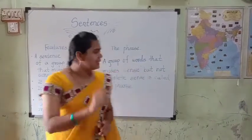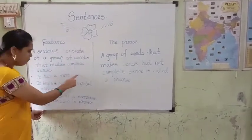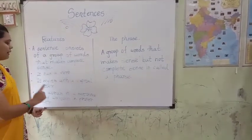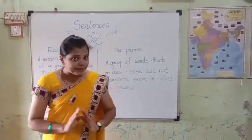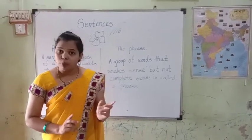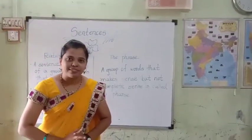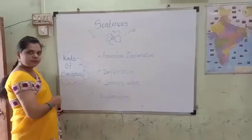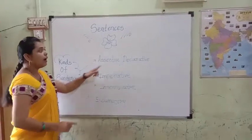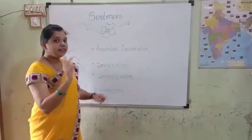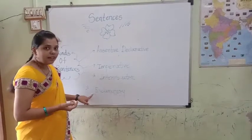So, a sentence consists of a group of words that makes complete sense. It has a verb. It begins with a capital letter. The words in the sentence are written in proper order, and sentences end with a full stop, question mark, or exclamation mark. Let's see what are the kinds of sentences. I have written on the board: number one, assertive or declarative sentences; number two, imperative sentences; number three, interrogative sentences; and number four, exclamatory sentences.